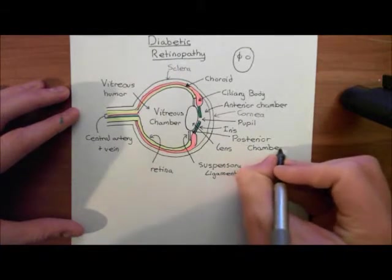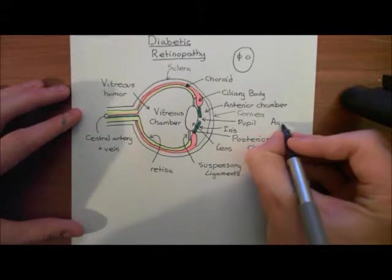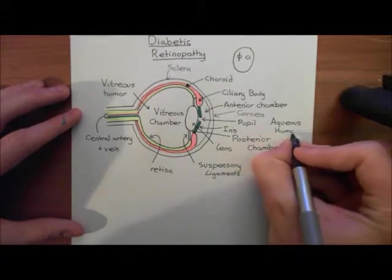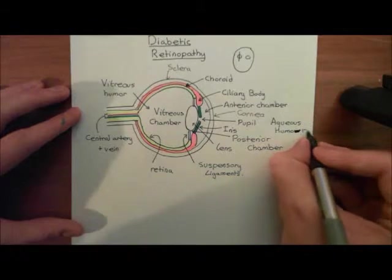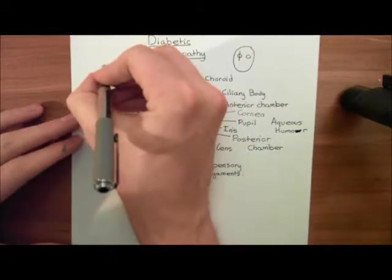The anterior and posterior chamber are full of aqueous humor, and this aqueous humor is produced by the ciliary body. It's not humor spelled like that - it's humor with no U, meaning fluid, a bodily fluid. So this is the structure of the eye.